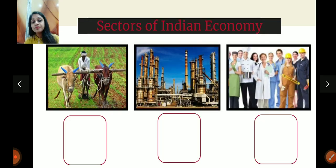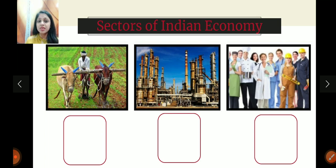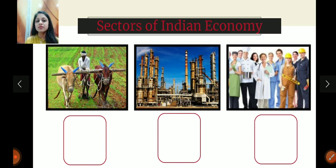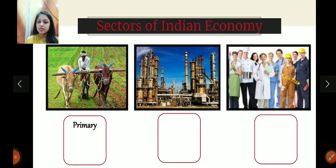After that comes the sectors of the Indian economy — that is, in which three sectors is the Indian economy distributed? When we study the Indian economy in terms of production, consumption, exchange, and distribution, which are the sectors from where production comes, where consumption happens, and where goods and services are produced? As you can see, there are three sectors: primary, secondary, and tertiary.